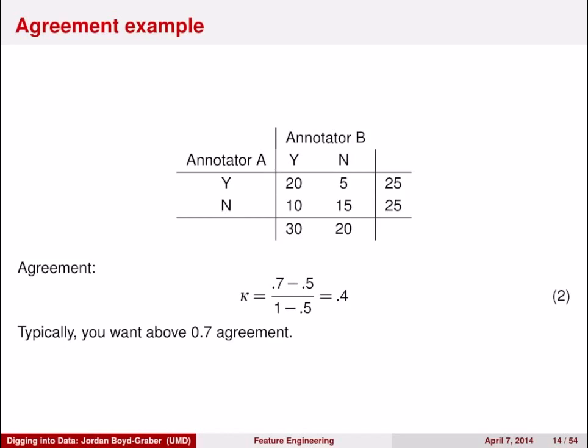Typically you want agreement above a 0.8 threshold, so a kappa of 0.4 isn't too good. We would really want agreement to be better than this. So you would look at your definitions, look at your label set, and try to improve them so that annotators can agree more often.